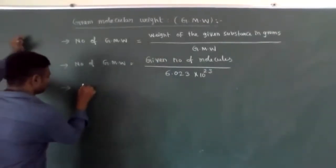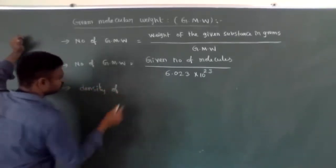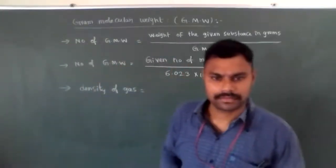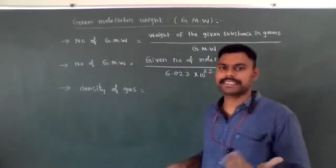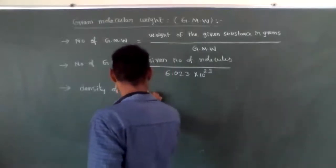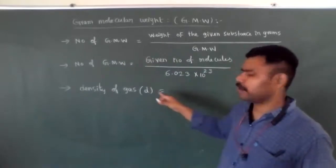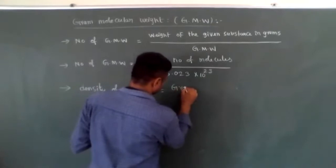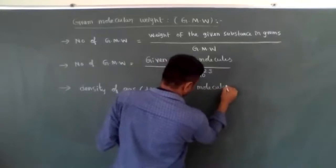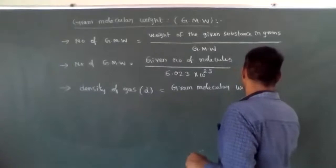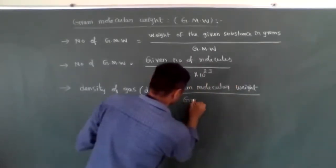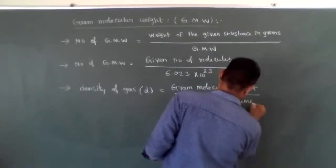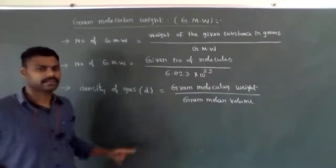Now, density of gas. What is the density formula? Density D equals mass by volume. For a gas, mass means gram-molecular weight, and volume means gram-molar volume. So density of gas equals gram-molecular weight divided by gram-molar volume.